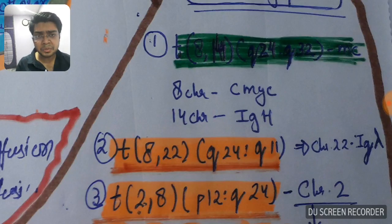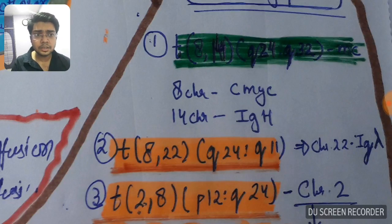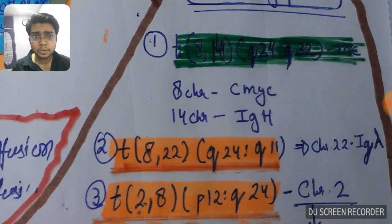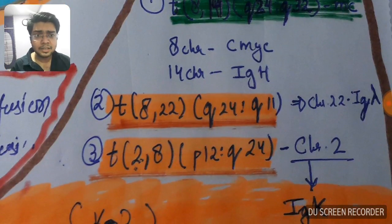C-MYC gene, and the 14 in the type 1 which is the most common, so t(8;14) is the most common. 8 is C-MYC and the 14th is IGH. Now the second type is translocation t(2;8), and the third is t(2;8).